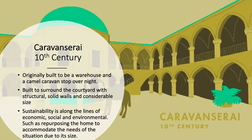The Caravansari of the 10th century. Originally built to be a warehouse and a camel caravan overnight stop. Built to surround a courtyard with solid structural walls and considerable size. Sustainability is along the lines of economic, social, and environmental — such as repurposing the home to accommodate the needs of a situation due to its size, for events like political gatherings or large weddings. A lot of these houses were converted for such events because of their size, sense of comfort, and protection. As you can see in the image, there are camels drinking out of water in the center of the building.